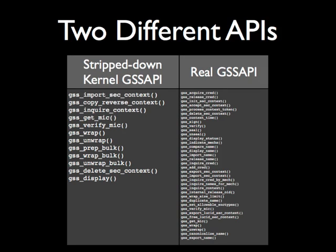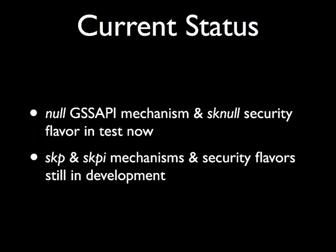The key difference between the stripped-down GSS API mechanism and the full-fledged one is the number of function calls. The stripped-down one requires implementing maybe 10 or so function calls, while the real GSS API requires implementing around 42. So instead of just implementing 10 for a kernel stub, we're having to implement 50 or so. Basically we've had a lot more work than we thought, but we're plotting through it. We have the null mechanism complete and we're starting to work on testing. We'll land that as quickly as possible so people can start using it to test the GSS API pathways. We're working on the SKP and SKPI security flavors and mechanisms right now.